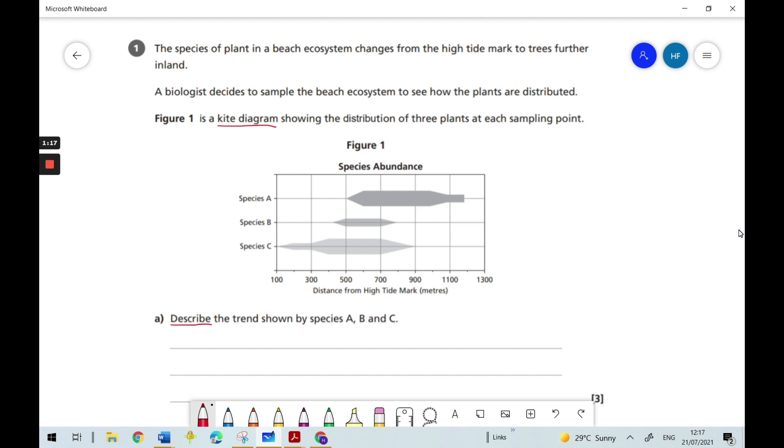Now if we have a look at the graph or the kite diagram, we can see on the x-axis we've got distance from the high tide mark. The high tide mark is just the point at which the sea comes up when it's the highest tide. So it's the highest point that the sea reaches on the shore.